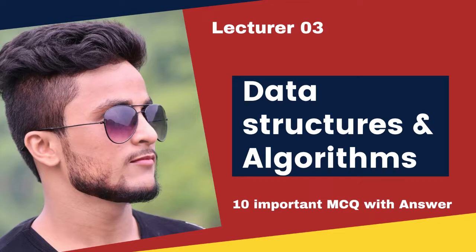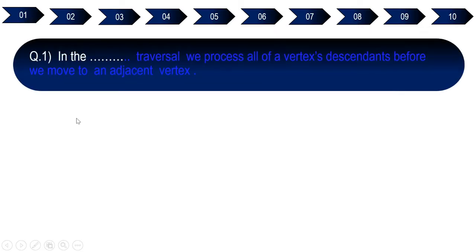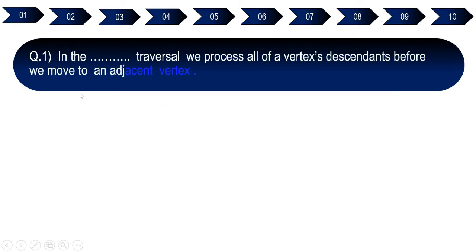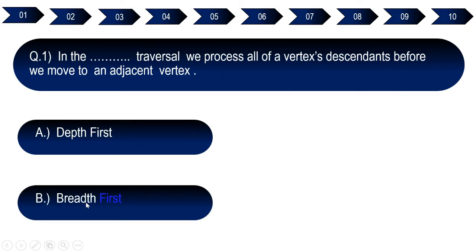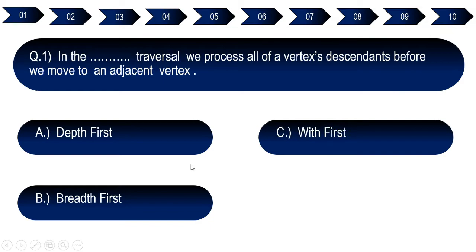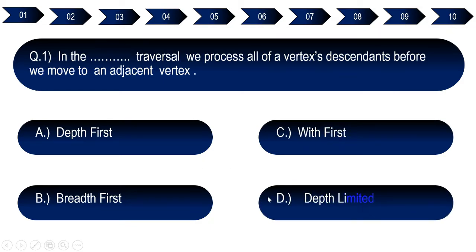These are very important from exam, off-campus placement, and interview points of view. Question number one: In the dash traversal, we process all of a vertex's descendants before we move to an adjacent vertex. Option A: depth first. Option B: breadth first. Option C: width first. Option D: depth limited. The right answer is option A, depth first.